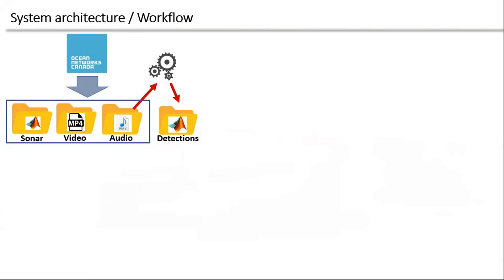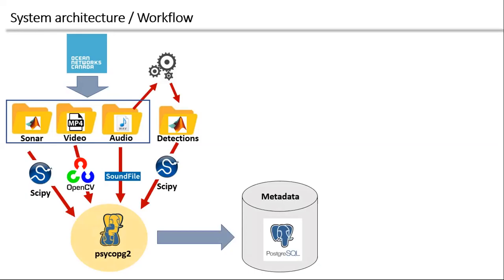All the data are available on Ocean Networks Canada data storage. They have a Python API to get the data, but to simplify the problem right now I downloaded just a subset. There are three data streams: the sonar are Matlab files, the video are MP4, and the audio are WAV files. I also processed the audio data with some algorithm to detect fish sounds, and those detections are stored as Matlab files.